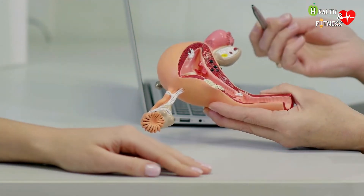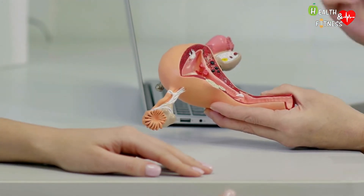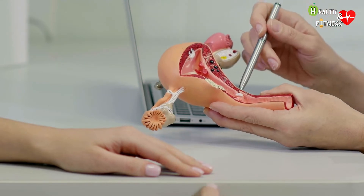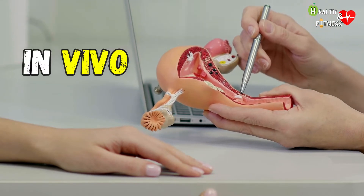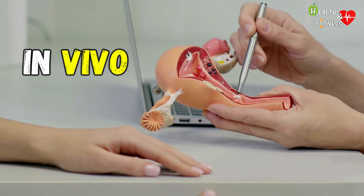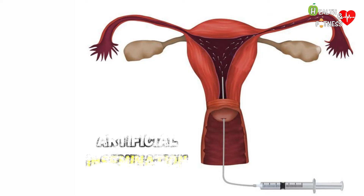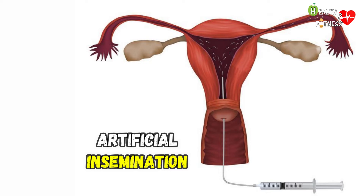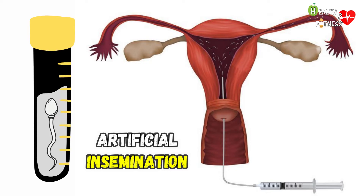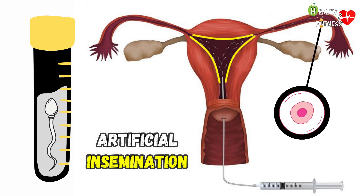Among the 1st level techniques, we find the simplest and least invasive ones. In this case, fertilization takes place in vivo, i.e. inside the female genital system. Artificial insemination, especially intrauterine insemination, is the main technique. It consists in inserting the spermatozoa, previously treated in the laboratory, into the woman's uterine cavity. In this way, the distance between the spermatozoa and the egg is shortened, thus facilitating the encounter.